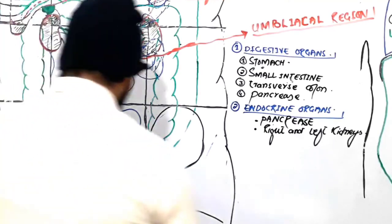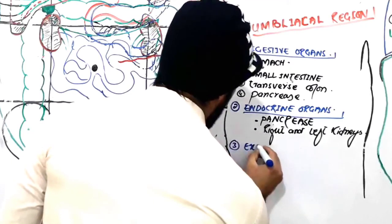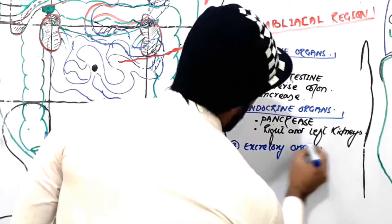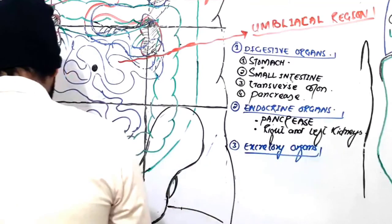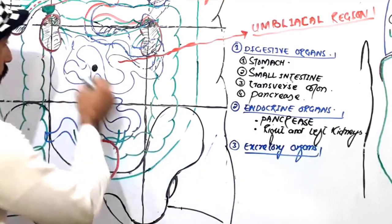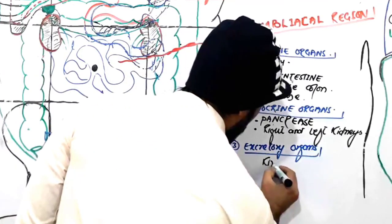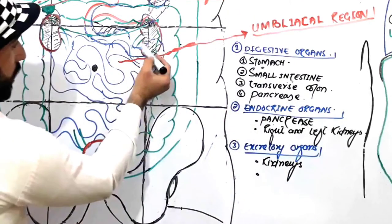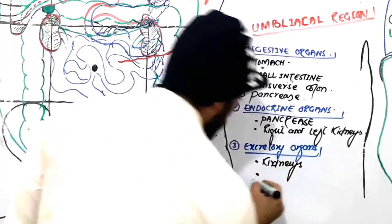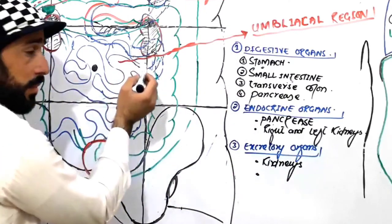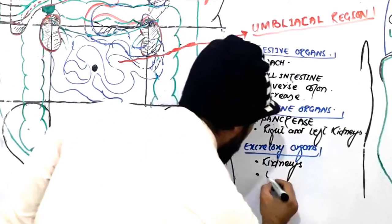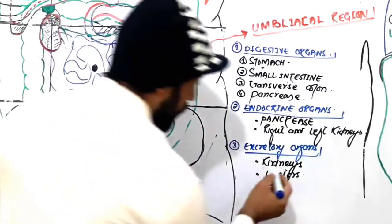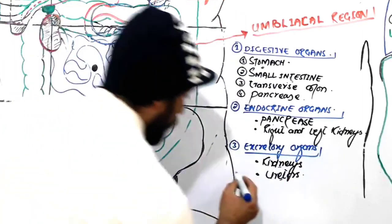The third group of organs are the excretory organs. Our kidneys play a very important role in the excretion of different substances, so the right and left kidneys are excretory organs found in the umbilical region. Additionally, the right and left ureters are present here. So the kidneys and ureters are the excretory organs present in the umbilical region.